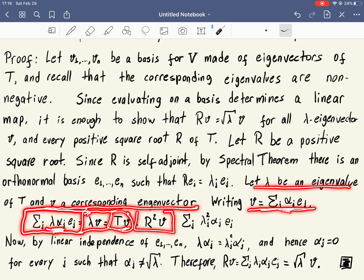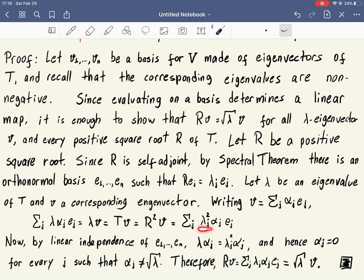On the other hand, TV is R squared V, because R is the square root. And what is R squared V? Well, these are eigenvectors. Alpha J times an eigenvector is also an eigenvector. And R applied to these eigenvectors is lambda J times the eigenvector. If we apply R again, then we get another lambda J again, so we get lambda J squared.